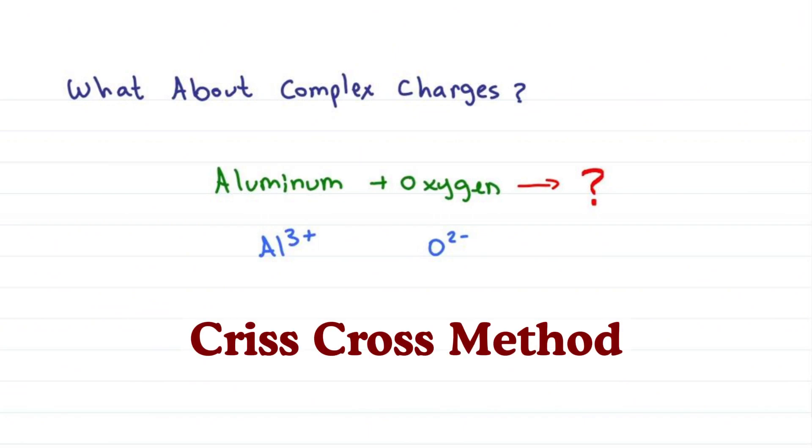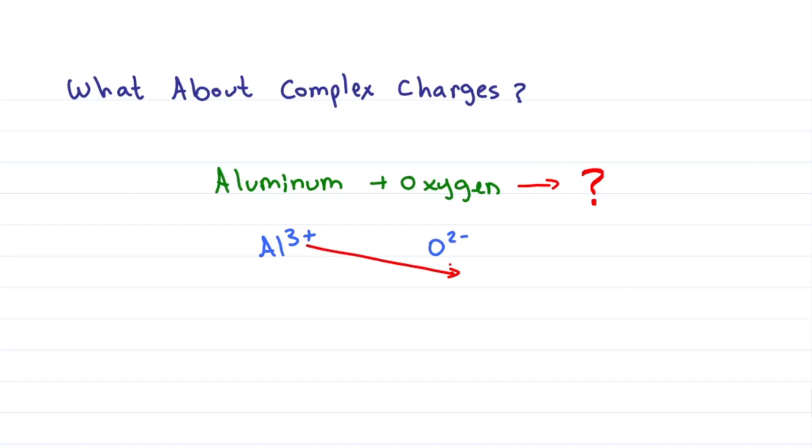Or use the crisscross method. It's as simple as it sounds. You just crisscross. You bring the charge from your cation as the subscript for the anion and then reverse. That means aluminum gets a subscript 2 because oxygen was negative 2, and oxygen gets a subscript 3 because aluminum is plus 3.